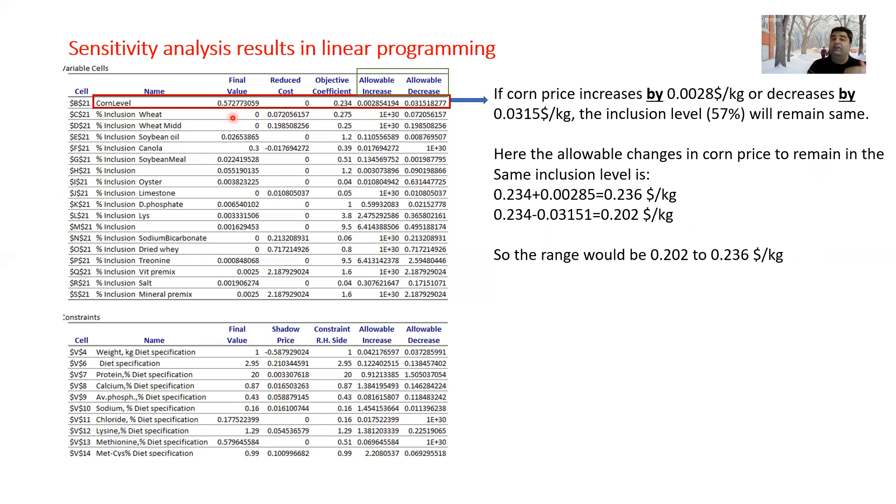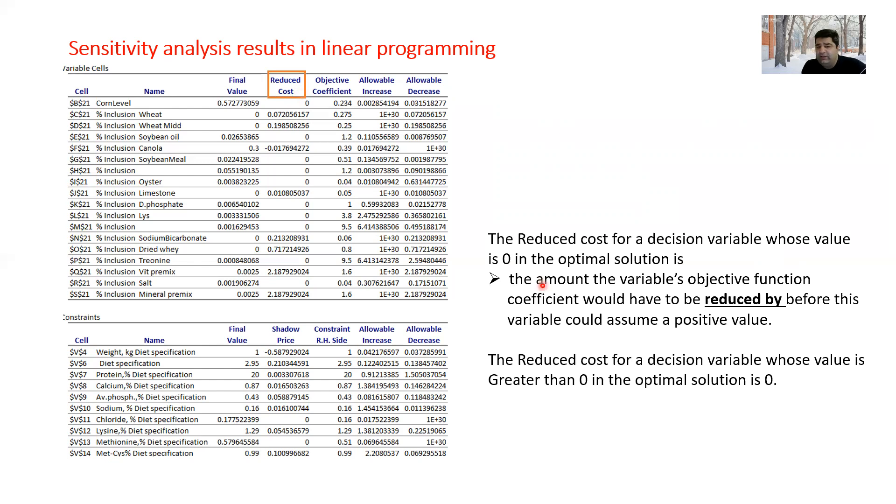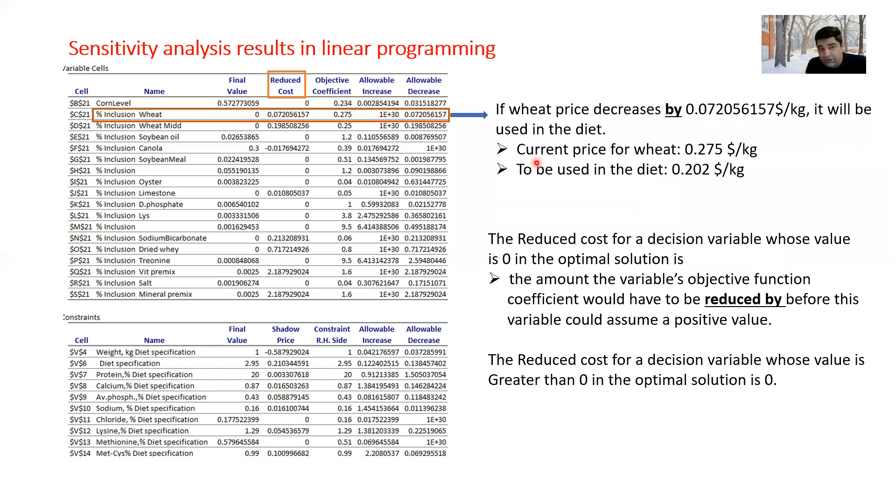Otherwise, if the corn price goes beyond this range, the inclusion rate will be different. The second term I'm going to introduce is reduced cost. The reduced cost for a decision variable whose value is 0 in the optimal solution is the amount the variable's objective function coefficient would have to be reduced by before this variable could assume a positive value. In practical language, you can see example from wheat here.